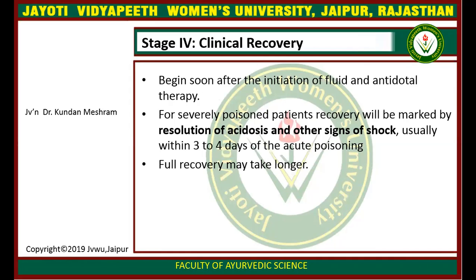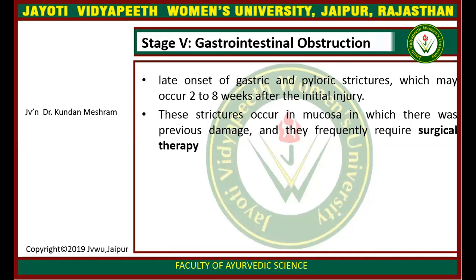Stage 4 is the clinical recovery phase. It begins soon after initiation of fluid and antidotal therapy. For seriously poisoned patients, recovery is marked by resolution of acidosis and other signs of shock, usually within 3 to 4 days of poisoning; full recovery may take longer. Stage 5, gastrointestinal obstruction, involves late onset of gastric and pyloric strictures which may occur 2 to 8 weeks after the initial injury.